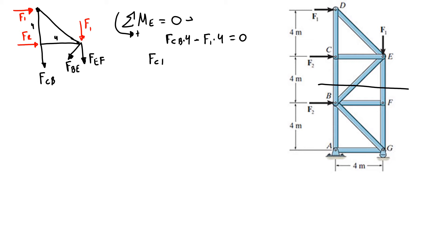We have FCB is the same as F1, so it will be 6 kN in tension. Now I'll decompose my force FCB according to this triangle. Here's 4 and 4, 4 and 4, we have a 45 degree angle.